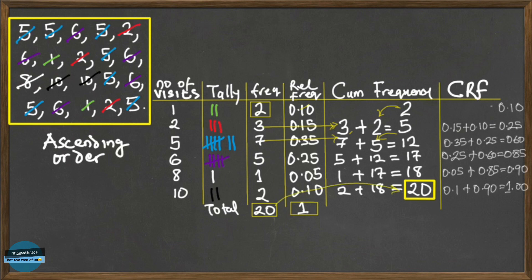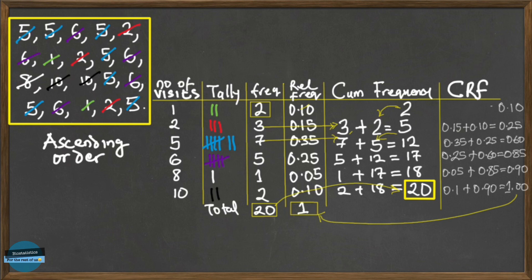As a check: the last cumulative frequency should equal the total count, all relative frequencies should add up to 1, and the last cumulative relative frequency should also equal 1. This is a check and balance to confirm you've done the calculations correctly. That is how to compute cumulative relative frequency and complete the cumulative relative frequency distribution table.